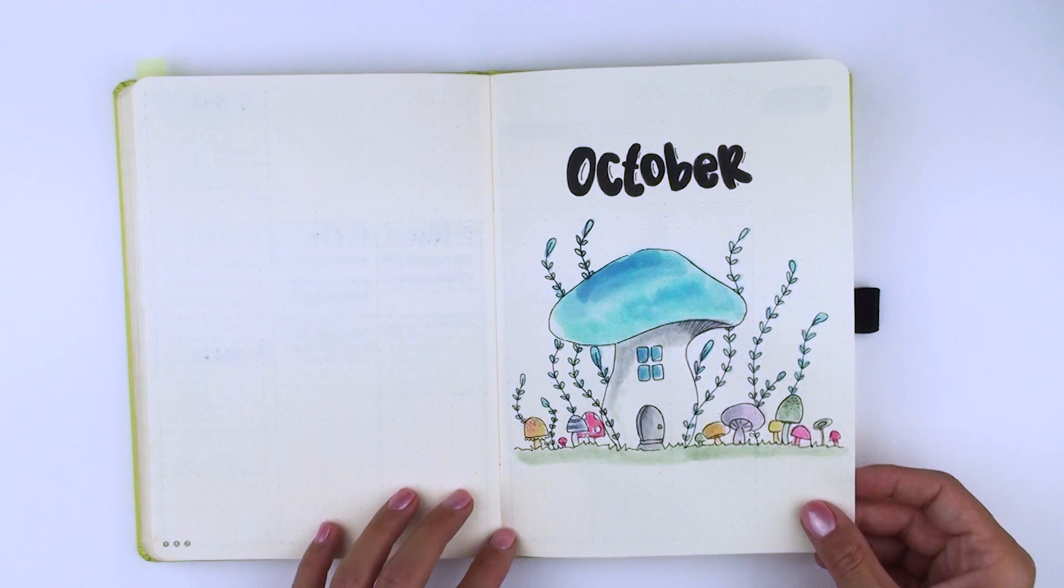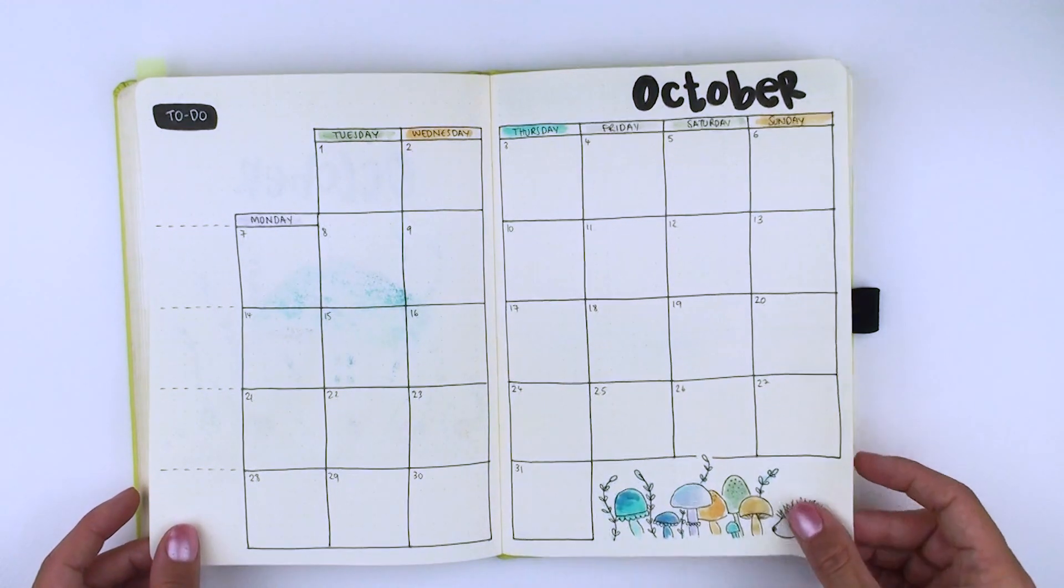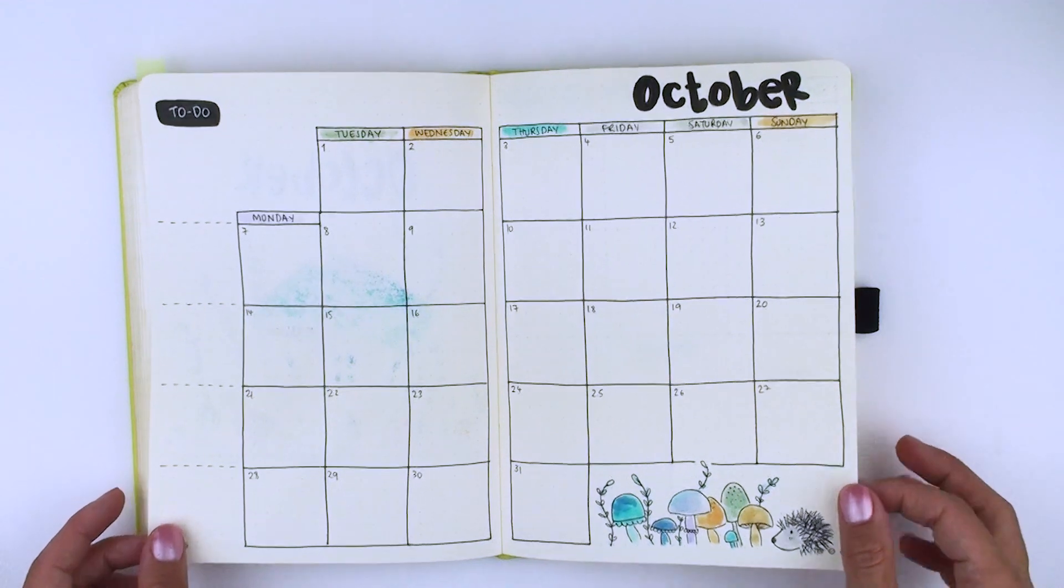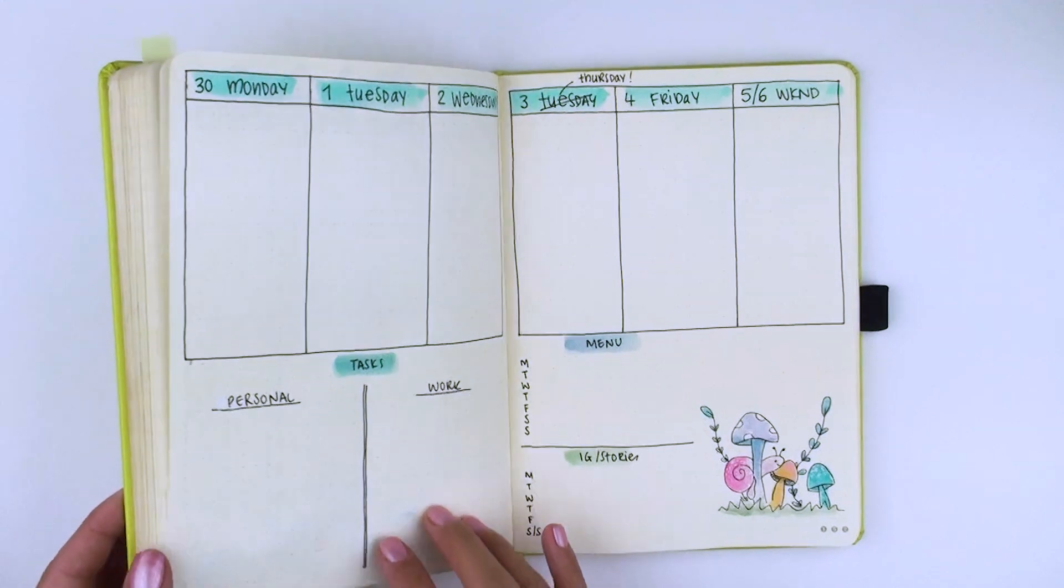And that's my setup for October in my bullet journal. I hope you liked the theme and that you found some inspiration. Let me know in the comments below what theme you've chosen for this month.